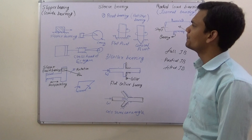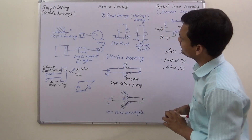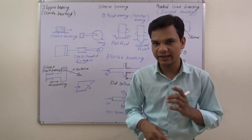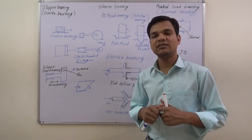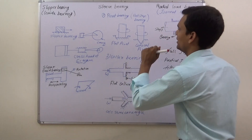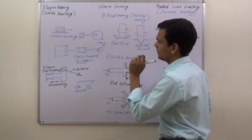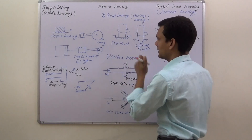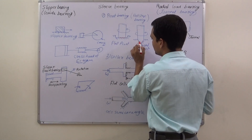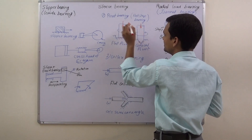In slip bearing, sliding occurs in a circular direction, so they are used for the shaft — sliding occurs around the periphery of the circle. The first type is the pivot bearing, also known as footstep bearing. In this bearing, sliding occurs along the periphery of the circle, and it can only take axial load along the axis.